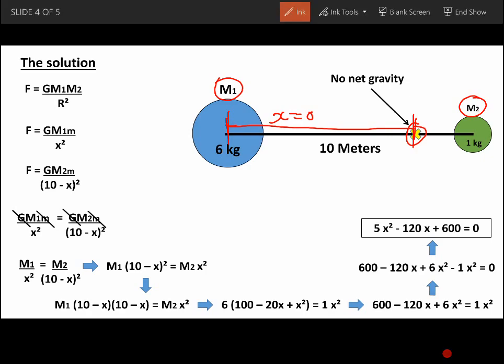So our quadratic formula, this would be A, this would be B, and this will be C.